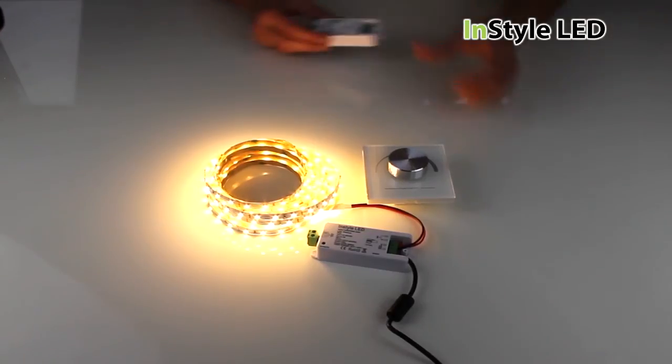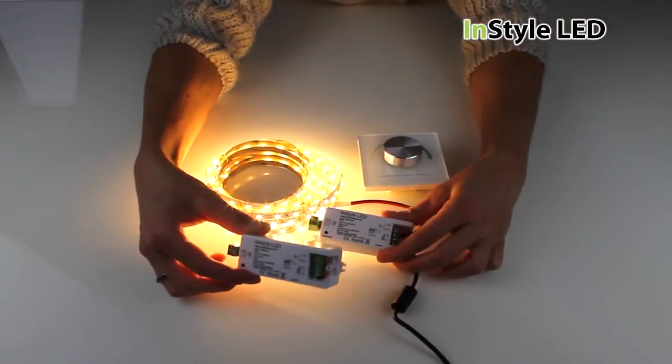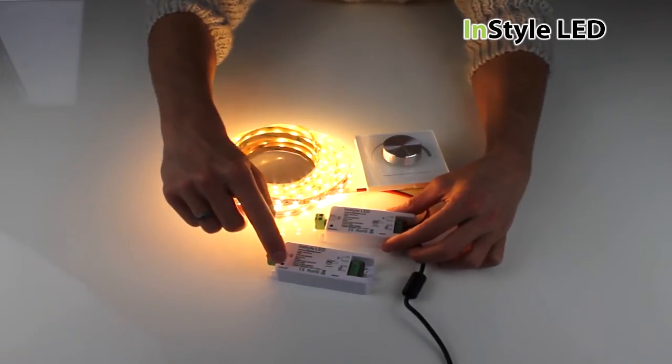You can even add as many dimming receivers as you require to be paired from the one controller. You simply follow the same pairing setup.